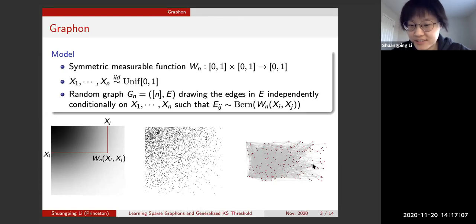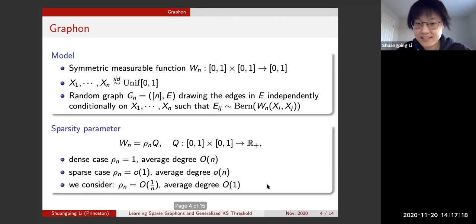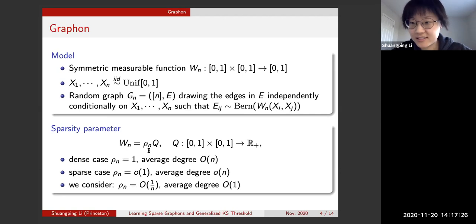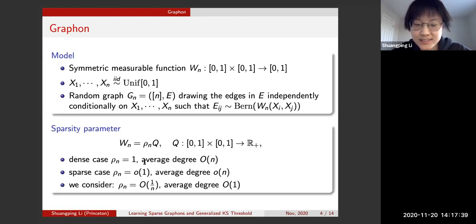Our problem, as in the title, is learning sparse graphons. Given a random graph, how do we reconstruct the graphon? In many cases we consider w_n of the form rho_n times q, where q is a fixed function and rho_n is the sparsity parameter indicating how sparse the graphon is. When rho_n equals one, this is the dense case, where vertices have average degree O(n).